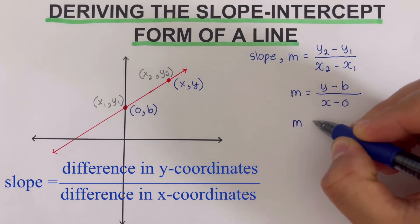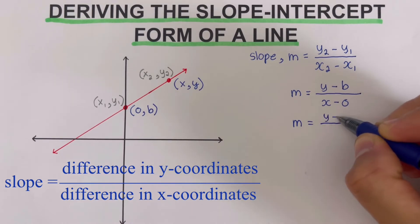This would come out, m is equal to y minus b over x.